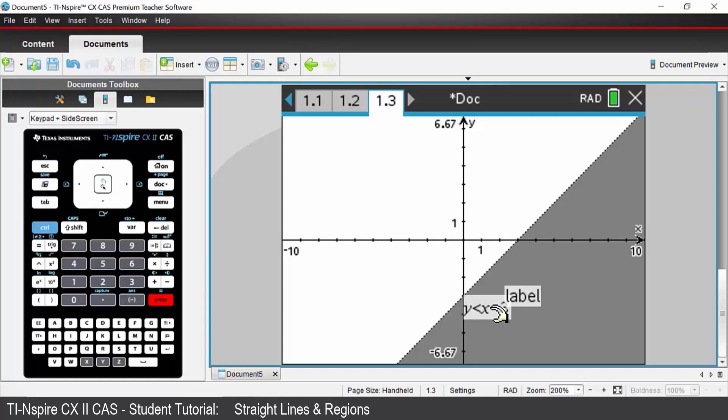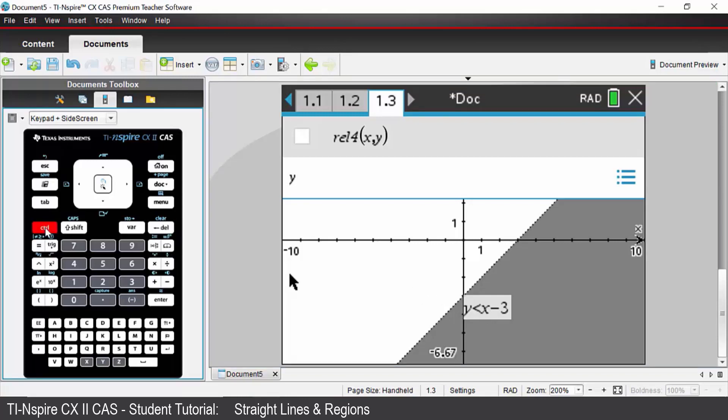We're now going to enter a second region. So press the tab key and type in y. Now we're going to go bigger than or equal to. You can type in bigger than with an equal sign, or alternatively press the control key on your keyboard and then the equals sign and you will get a little template. Choose the bigger than or equal to symbol and we're going to graph negative x add 1.